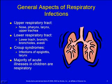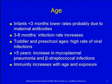Respiratory illnesses are a major source of acute illnesses in children — they have colds all the time, runny noses, sniffles, lots of respiratory illnesses. Infants less than three months actually have a lower rate of respiratory illnesses, probably because they still have some of the maternal antibodies.